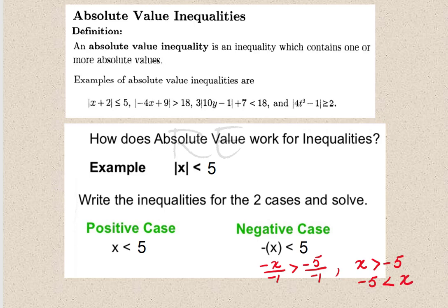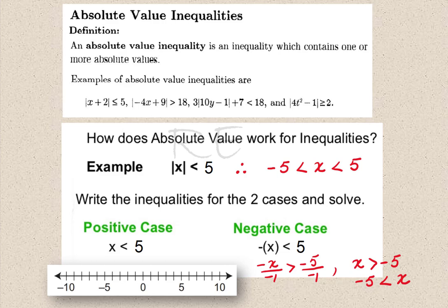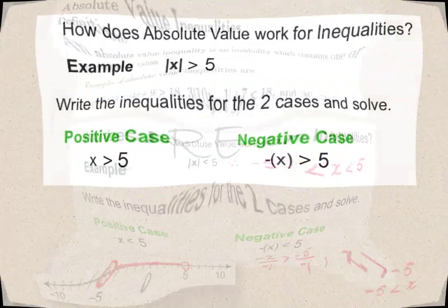Since we have both of them, the cases become a compound inequality — a conjunction: negative 5 is less than x, which is less than 5. On the number line, we place an empty circle at 5 and an empty circle at negative 5, and take all values in between.